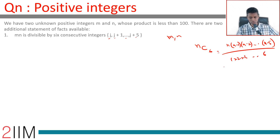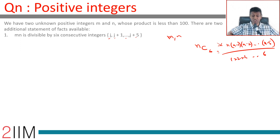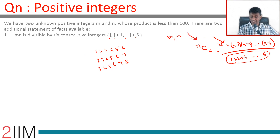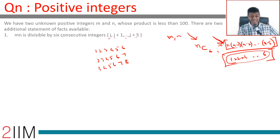The product of any six consecutive integers is always a multiple of 6 factorial. For example: 1×2×3×4×5×6, or 2×3×4×5×6×7, or 3×4×5×6×7×8. If m×n is divisible by six consecutive integers — whether 1,2,3,4,5,6 or 2,3,4,5,6,7 or 3,4,5,6,7,8 — it is divisible by 6 factorial. In any six consecutive integers you will definitely get a multiple of 6, a multiple of 5, a multiple of 4, giving you at least 2², 3, and 5 as factors.